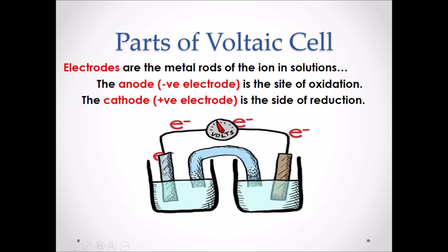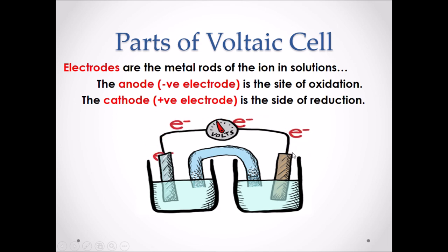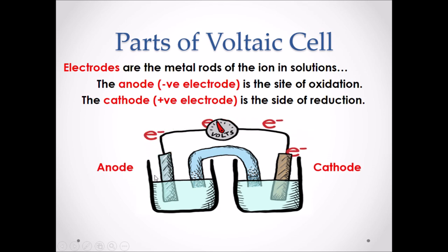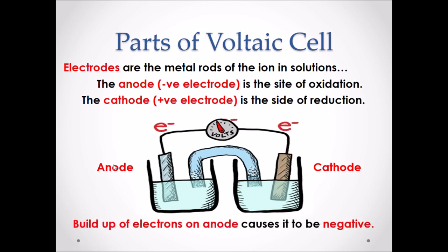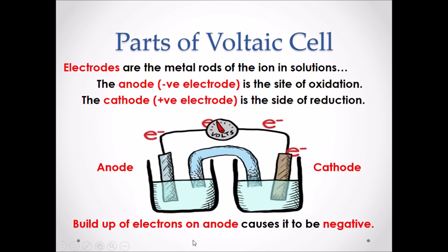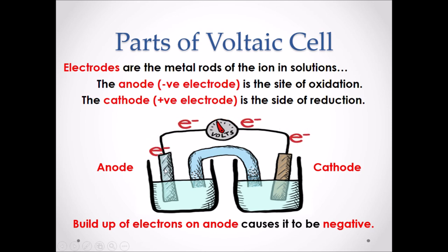Looking at the picture, we can see that electrons are traveling from one electrode through the external wire to the other electrode. That makes the first electrode the anode because it is losing electrons — it is going through oxidation. The other electrode is then the cathode because it is gaining electrons and going through reduction. The anode is considered a negative electrode because there is a buildup of electrons that occurs at the anode, making it very negative.